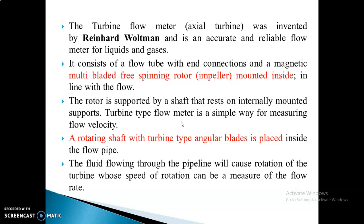It is a simple way of measuring flow velocity. It consists of a rotating shaft with angular blades placed inside the flow path. The fluid flowing through the pipeline causes rotation of the turbine, and the speed of rotation is a measure of flow rate. When fluid flows through the pipeline, the turbine rotates, and the speed of that rotation depends on the fluid flow.